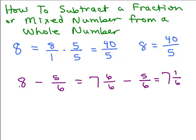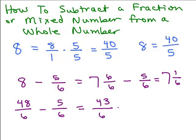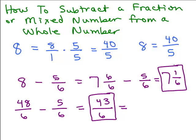Another way is to change the 8 to a fraction right off the bat. Leaving 5 sixths as is, I write 8 as something over 6. I multiply 8 times 6 to get 48 sixths. Now I have 48 sixths minus 5 sixths. The denominator stays 6, and 48 minus 5 is 43, giving 43 sixths. Both answers are correct — 1 and 1 sixth is the same as 43 sixths, just written as a mixed number versus an improper fraction.